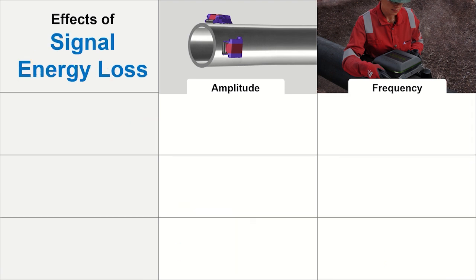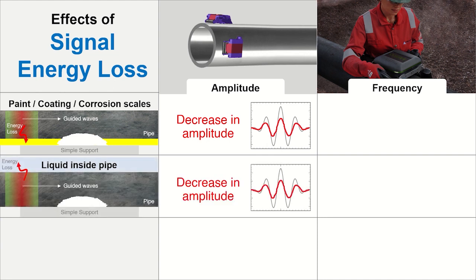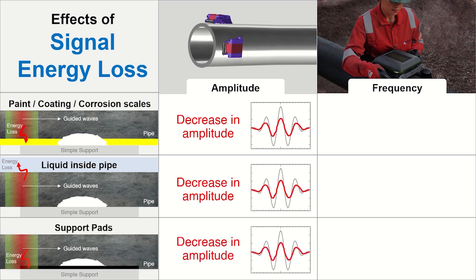Signal energy losses to paint, coating, and corrosion products within the pipe can also affect amplitude data. LAM-guided wave modes can also lose signal energy to liquids inside the pipe. Furthermore, signal energy can be lost to support pads between the pipe and the support. These energy losses can significantly affect amplitude and hence potentially introduce large measurement errors.